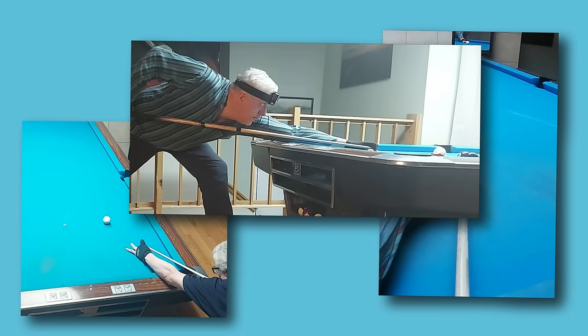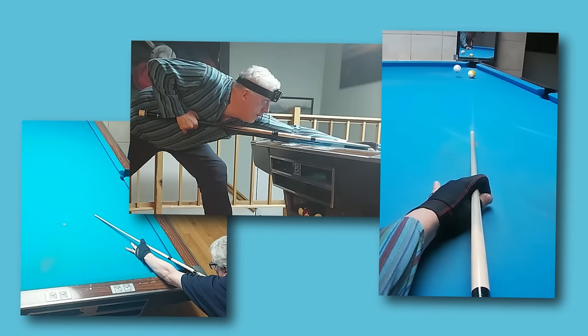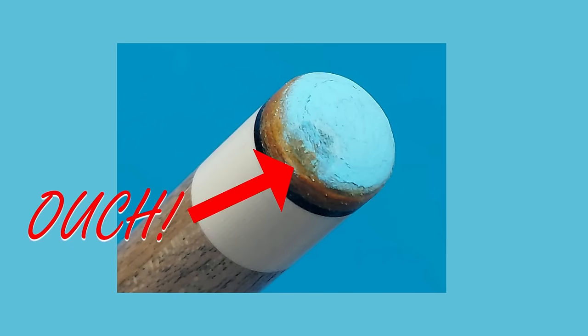When drawing the ball, we've all done this. And then we do this. What in the world? Is it really the chalk's fault? Can we figure out the cause of this miscue? How to stop it and draw more consistently? Let's find out.